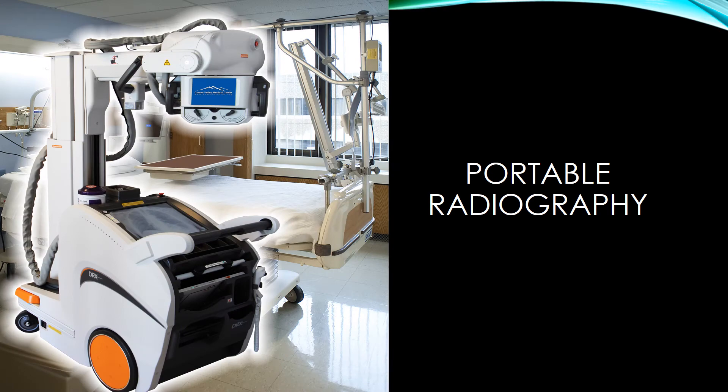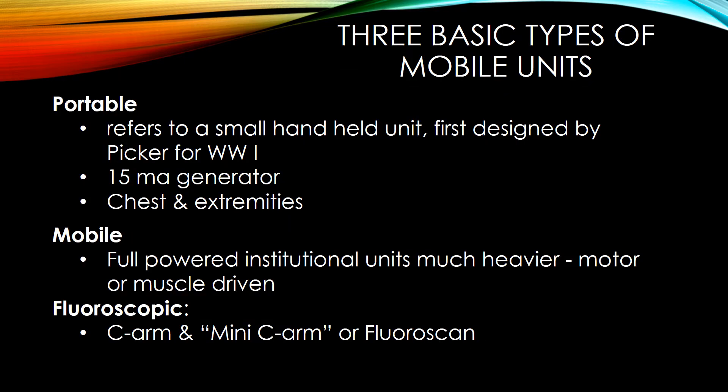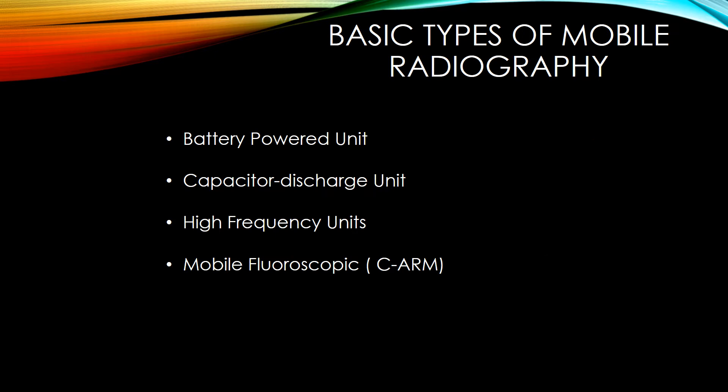Portable radiography. There are three basic types of mobile units. Portable refers to a small handheld unit first designed by Picker for World War I — it had a 15 mA generator and was used for chest and extremities in the field. Mobile refers to a full-powered institutional unit, much heavier and motor or muscle driven. Fluoroscopic refers to a C-arm, mini C-arm, or fluoroscan. Basic types include battery-powered units, capacitor discharge units, high frequency units, and mobile fluoroscopic or C-arm units.